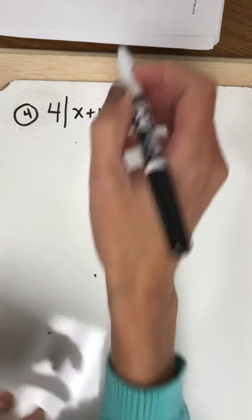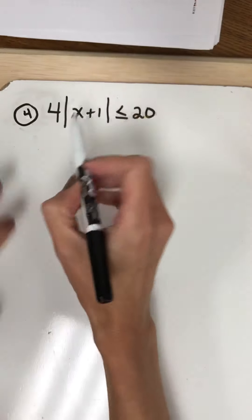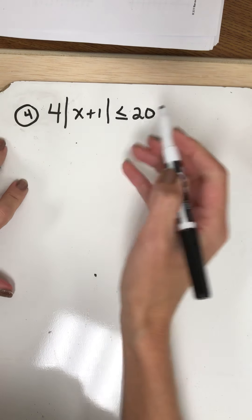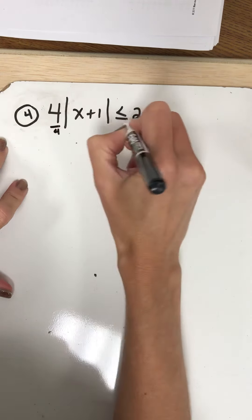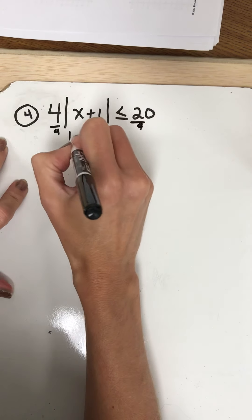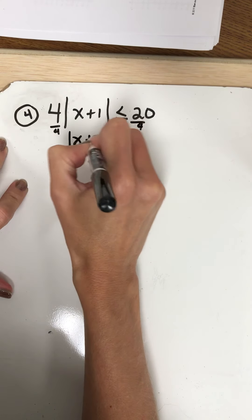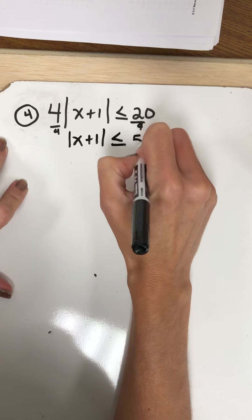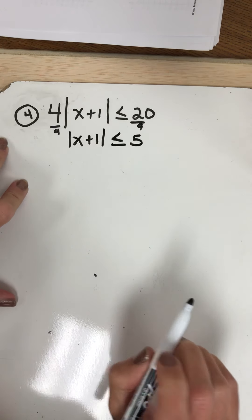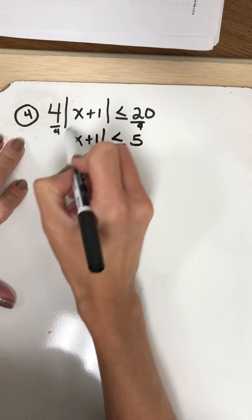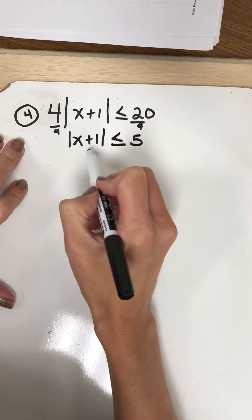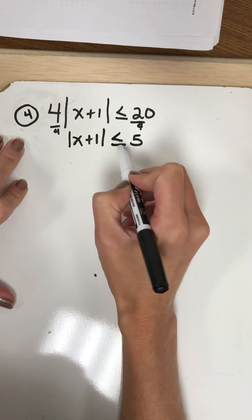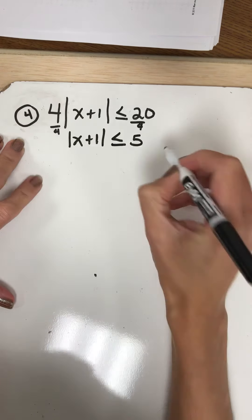First step with number 4: our absolute value isn't isolated. So I'm going to divide by 4 to isolate it. Now I have the absolute value of x plus 1 is less than or equal to 5. I'm going to use my number line. This means that this value is fewer than 5 steps away from 0.